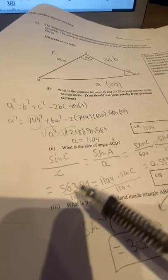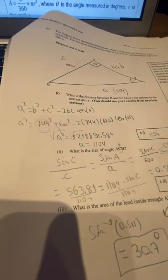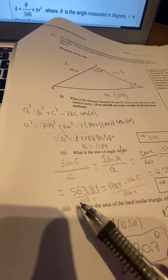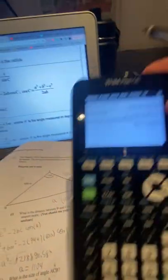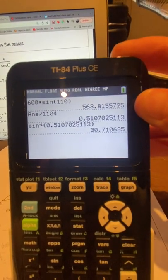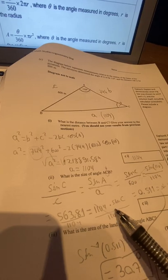We cross multiply both of them. We're going to get 563.81, which is here, which is 600 times sine of 110, which is going to give us this first value. And the other side is going to be 1104 times sine of C.